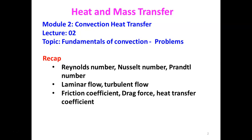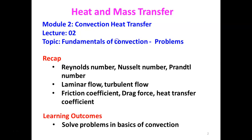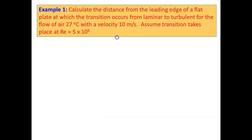For internal flow — flow through a pipeline — when the Reynolds number is less than 2300, the flow is laminar. When the Reynolds number is more than 2300, the flow is turbulent. We also defined the friction coefficient, drag force, and heat transfer coefficient. Based on the knowledge from the previous lecture, we will now solve a few problems on the basics of convection.